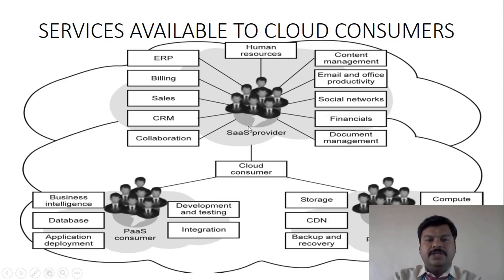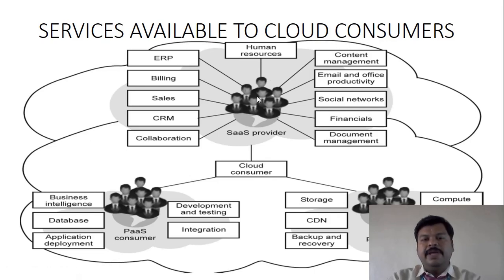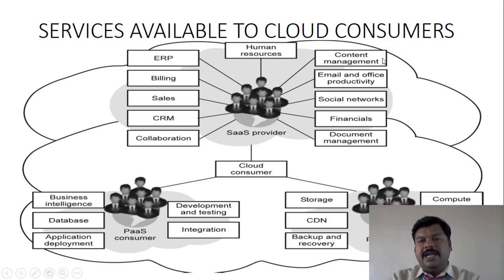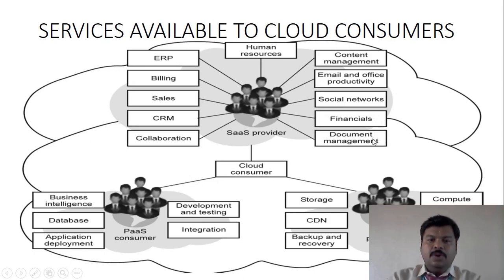Some cloud consumers request software as a service, which is the application layer. Services available include HR services, ERP, billing services, sales services, CRM services, collaboration tools, content management, email and office productivity, social networks, financials, and document management. So there are three types of services — IaaS, PaaS, and SaaS — provided to cloud consumers by cloud providers.